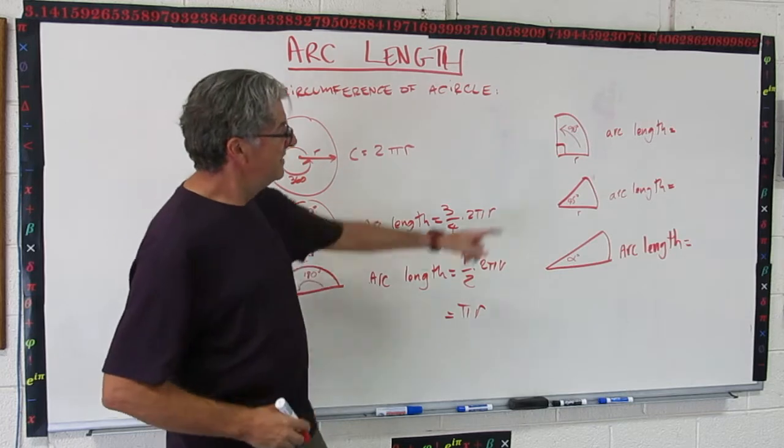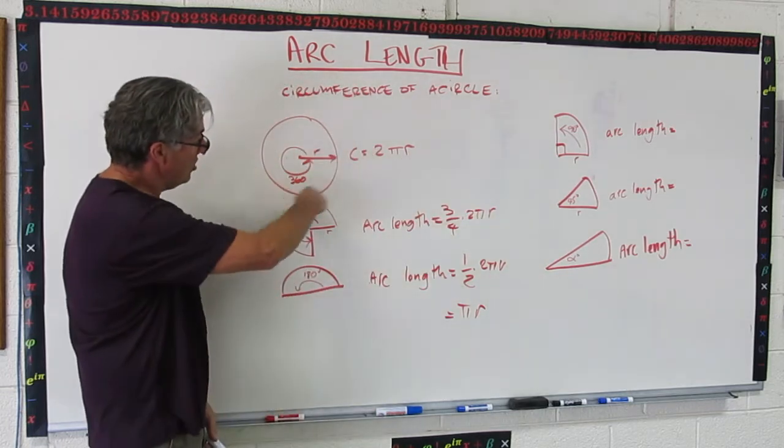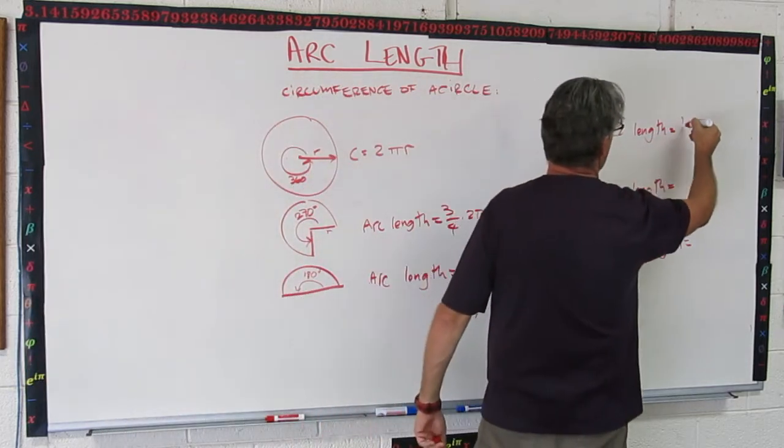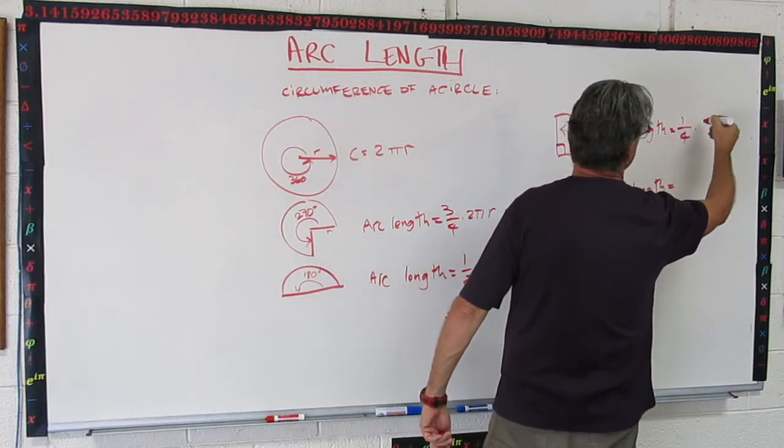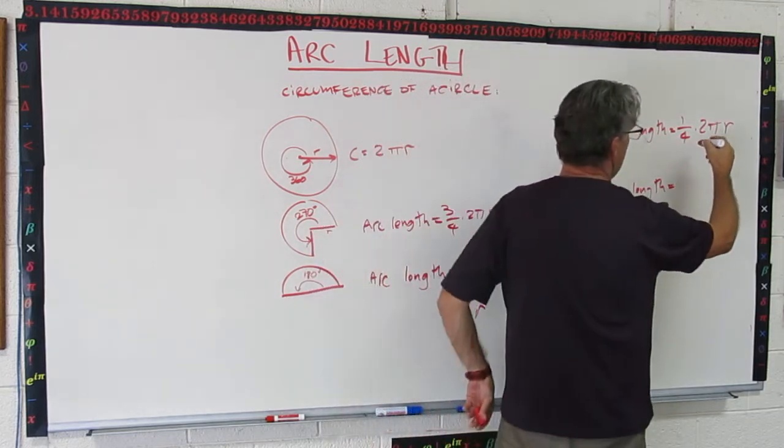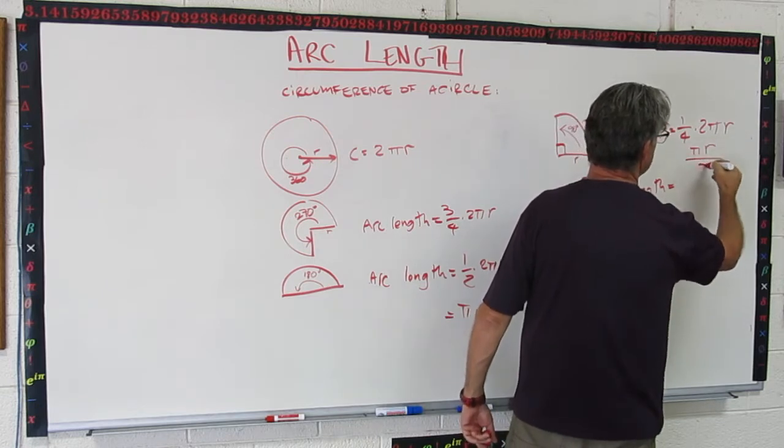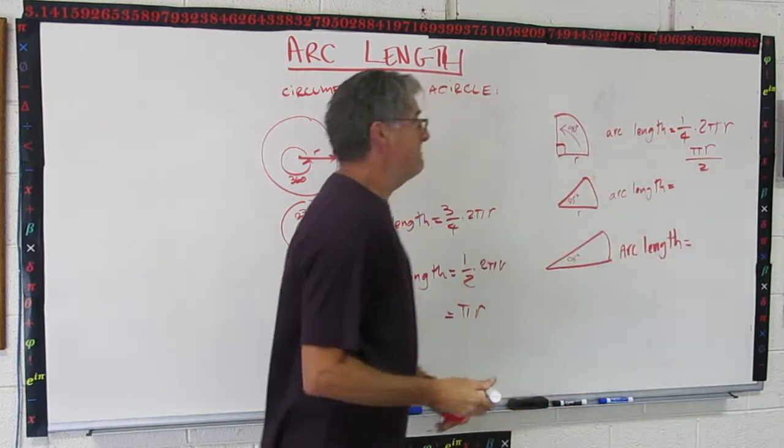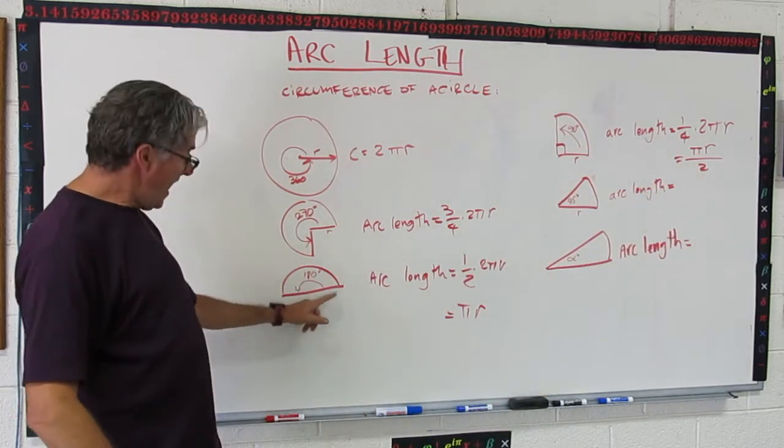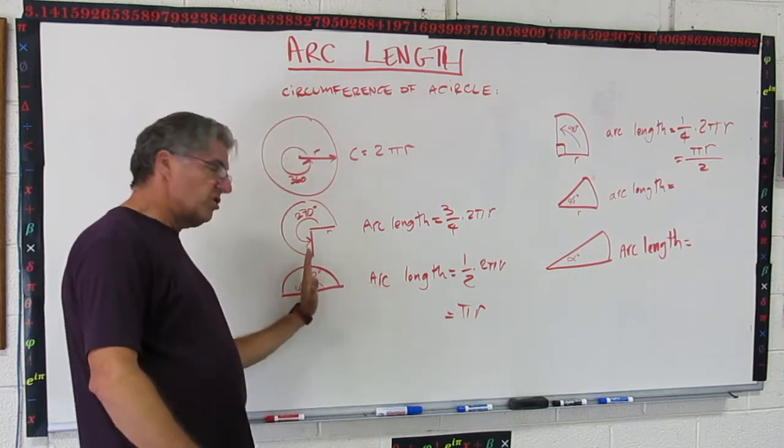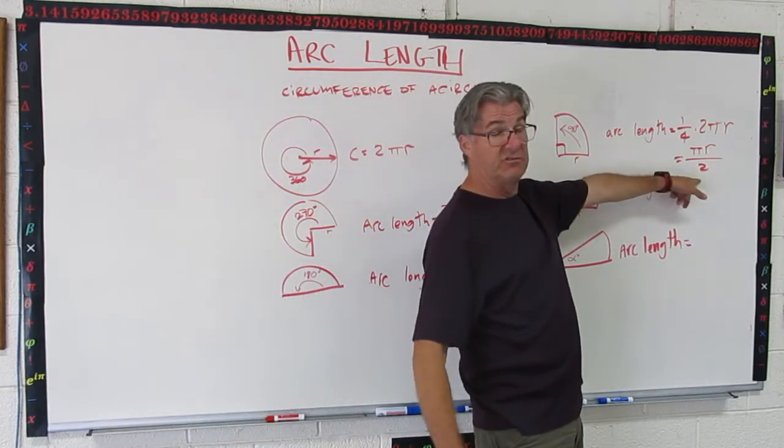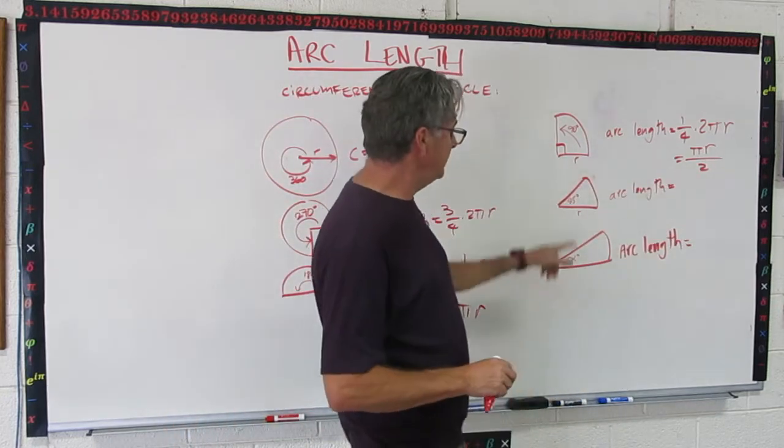Let's see how you did. The 90 is a quarter of the way around a circle. 90 is one fourth of 360. So we could do 1/4 times 2πr. And that's going to cancel down to πr/2. And that makes sense. If halfway around is πr, a quarter of the way around is going to be half of that. So this one is πr. So that one is πr/2. That's a half of πr.